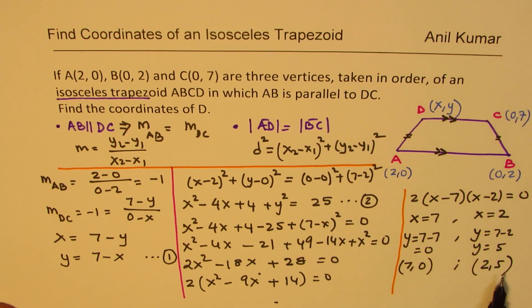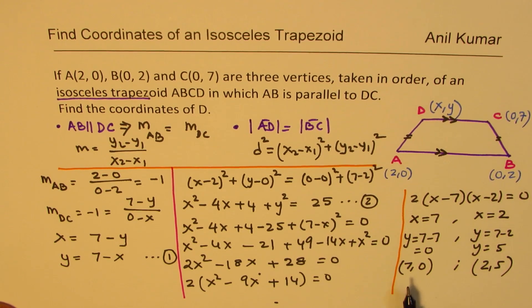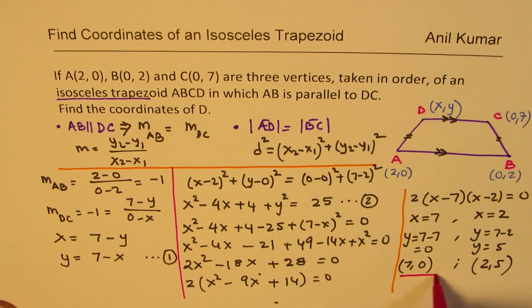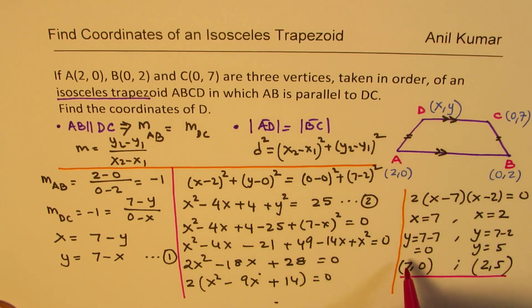So we have two possible solutions here. One of them is (7,0). The other one is (2,5). So our answer is the value of D could be (7,0) or (2,5). So I hope you understand and appreciate the method.